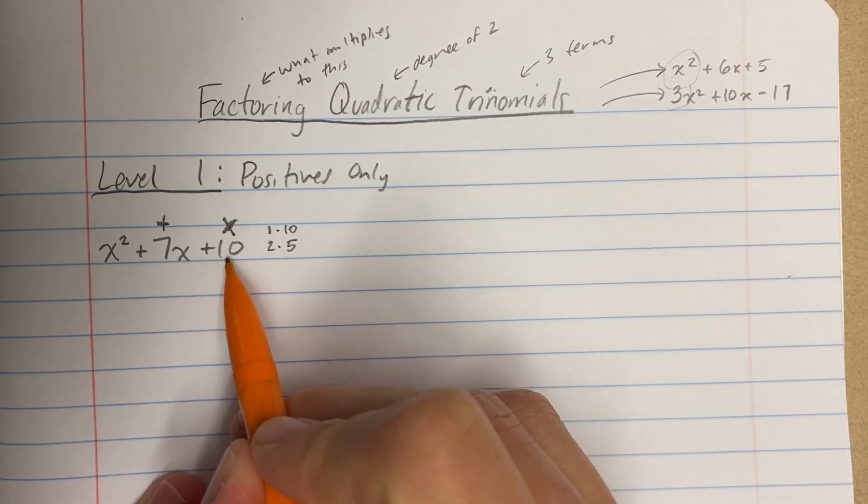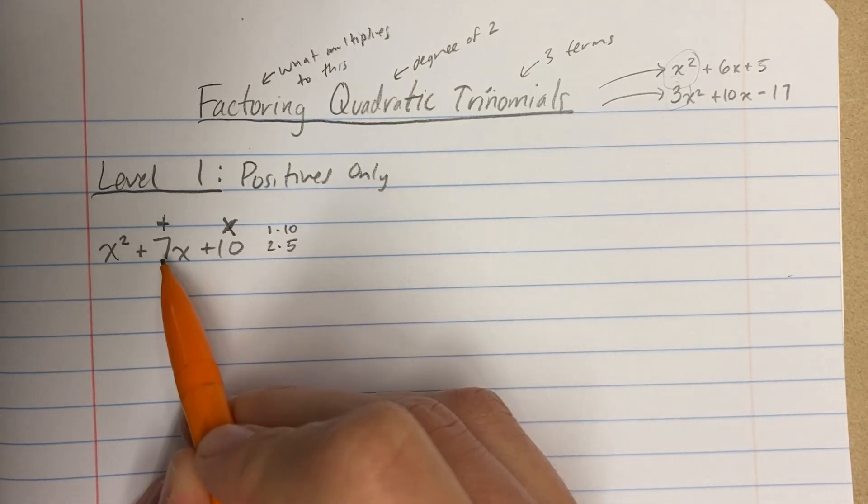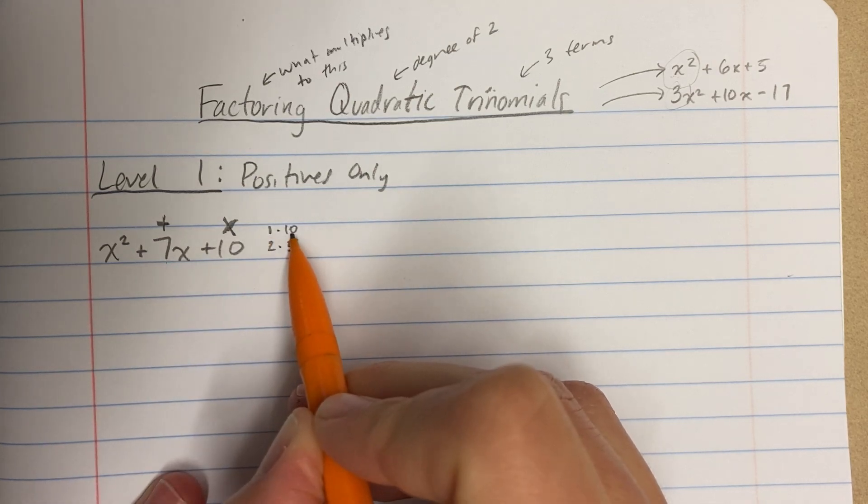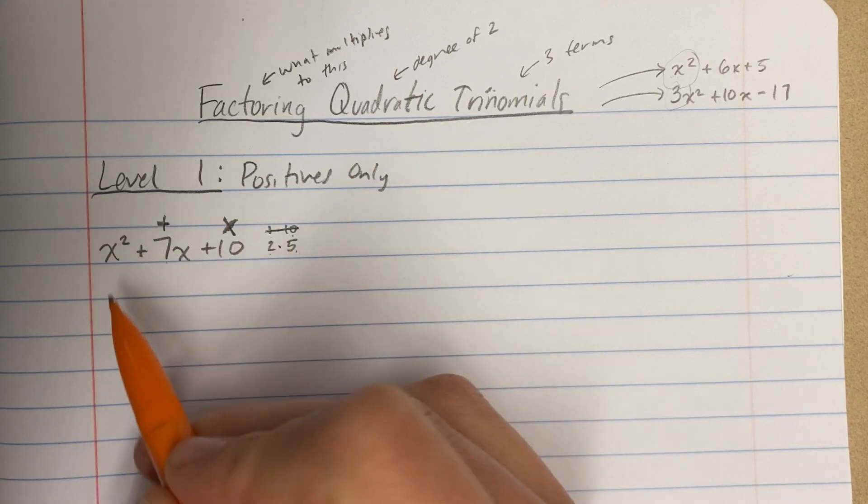But right now, remember what I'm looking for. I'm looking for two numbers that multiply to 10 and add to 7. So I'm looking, does 1 plus 10 equal 7? No. Does 2 times 5 equal 7? I'm sorry, 2 plus 5 equals 7? Sure does.